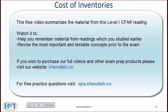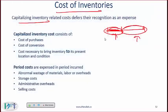If you are creating inventory — manufacturing something — what do you show as inventory cost? Any cost of raw materials, any cost of conversion, and any cost necessary to bring inventory to its present location and condition. All of these are capitalized.